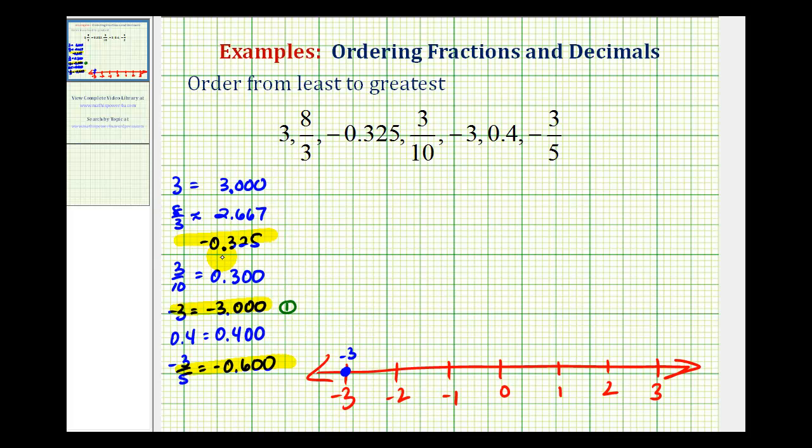And then comparing negative 0.325 and negative 0.600, negative 0.600 is going to be somewhere in here, which again was negative three-fifths. And then negative 0.325 is going to be closer to zero, maybe somewhere in here. So again ordering from least to greatest, this would be number two, and this would be number three.